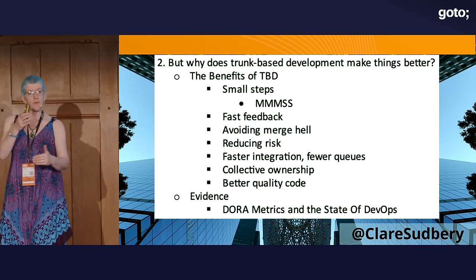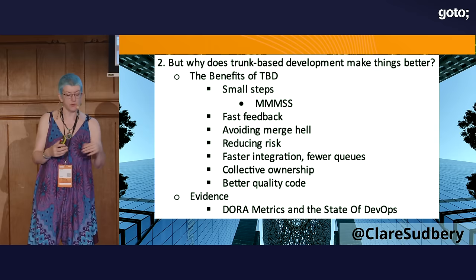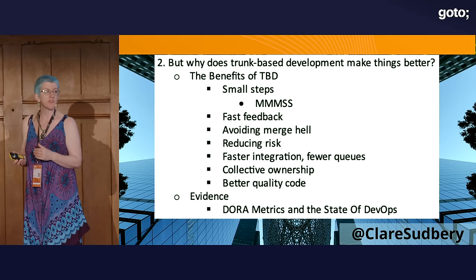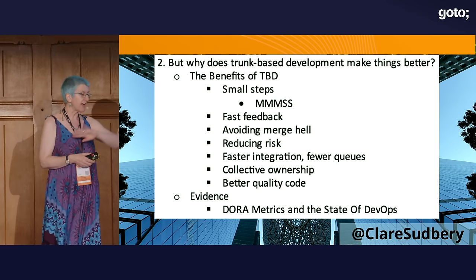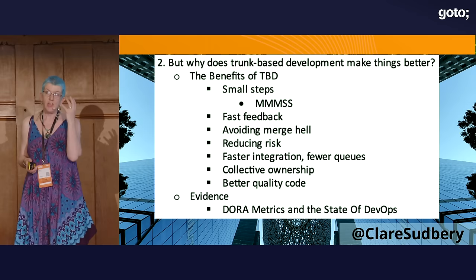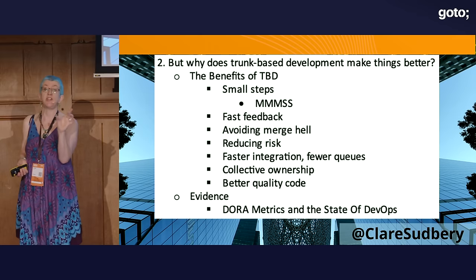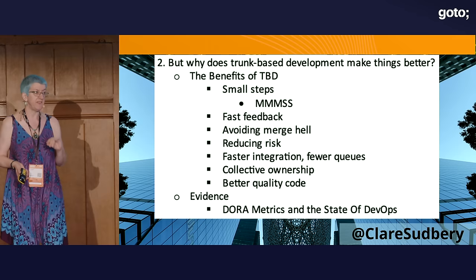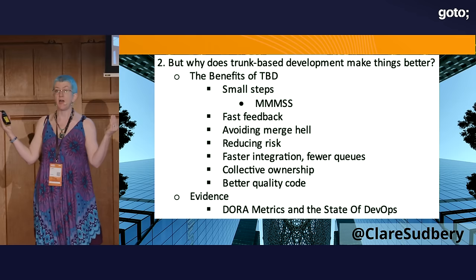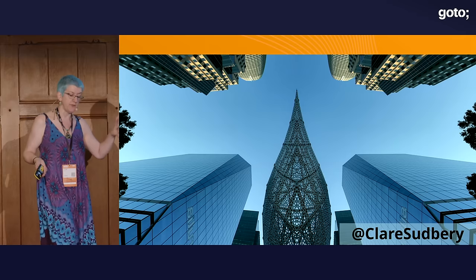Why does trunk-based development make things better? A lot of these benefits are also the requisite skills. You need to move in small steps to do continuous TBD — but it's also a benefit because moving in small steps makes you much more agile. You get fast feedback, you avoid merge hell, you reduce risk because every change is small, every problem is small, and every problem is easy to recover from. You've got faster integration, fewer queues, collective ownership, a highly collaborative working style, and better quality code. There's plenty of evidence in the DORA reports and the Accelerate book.